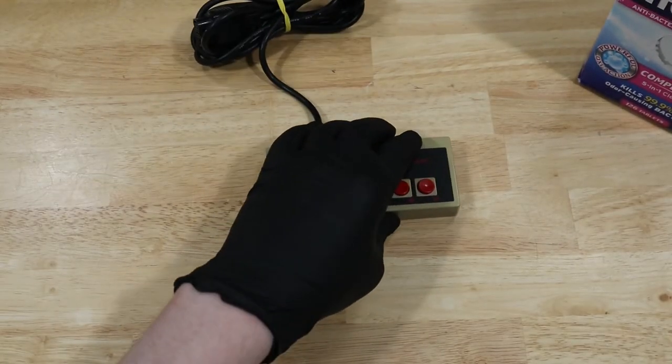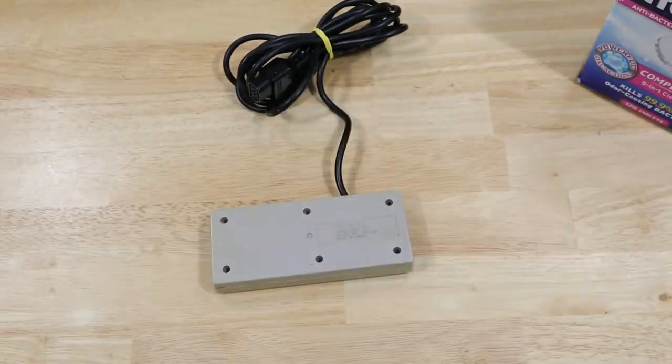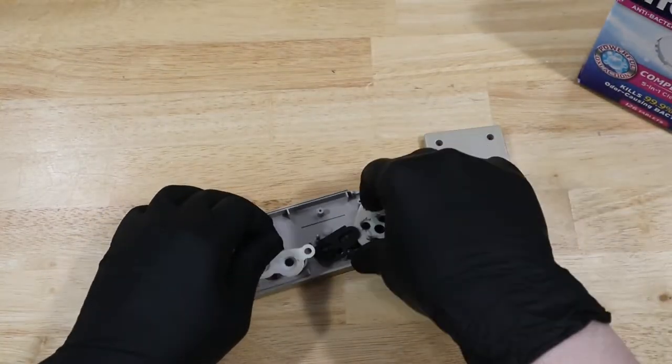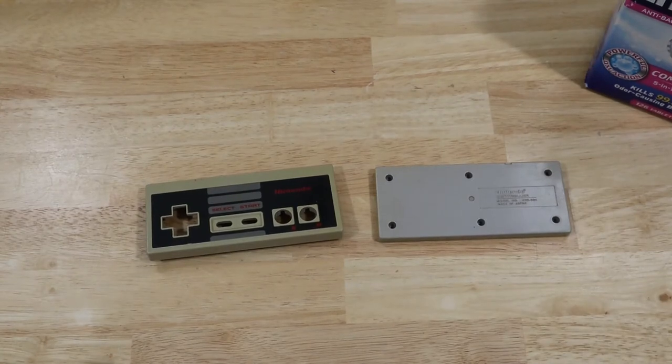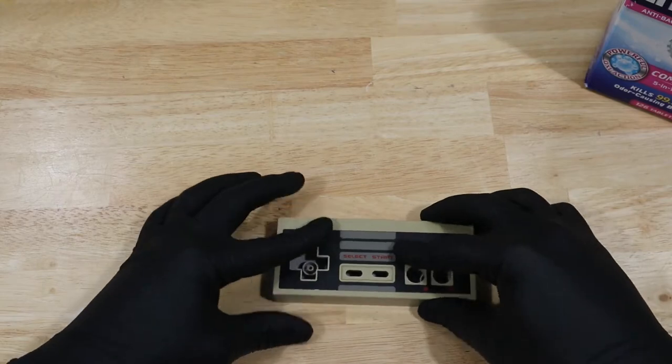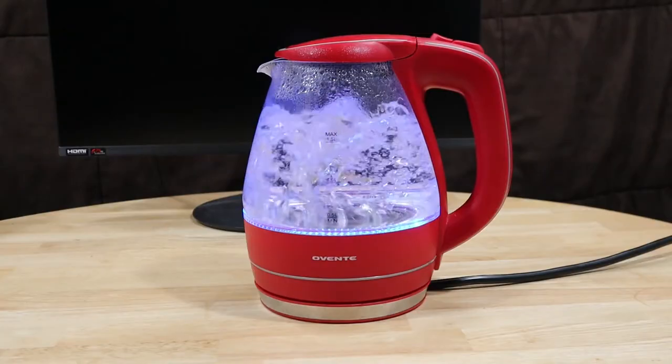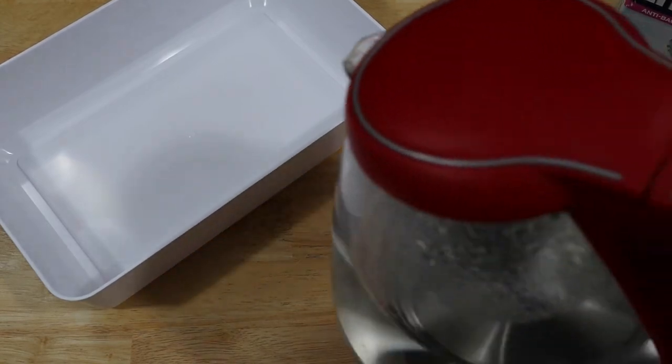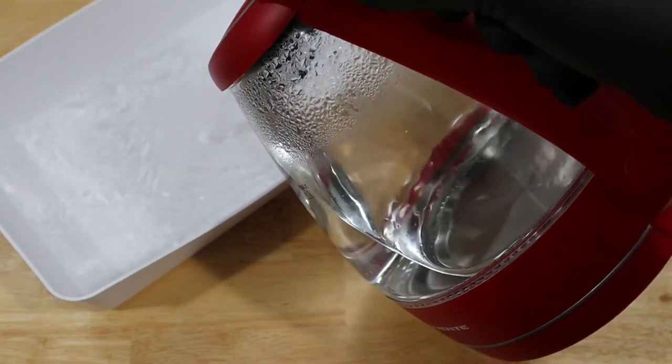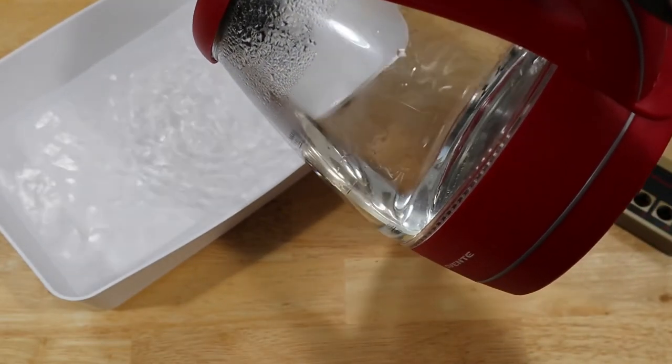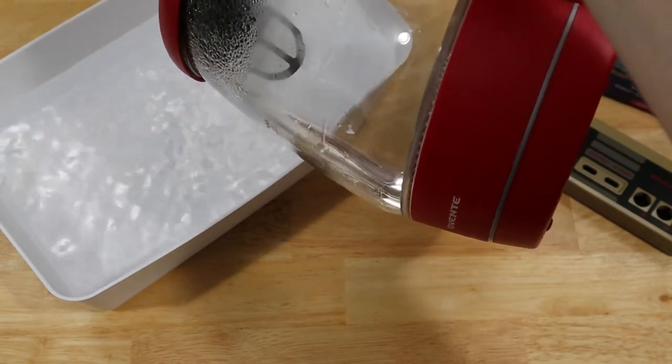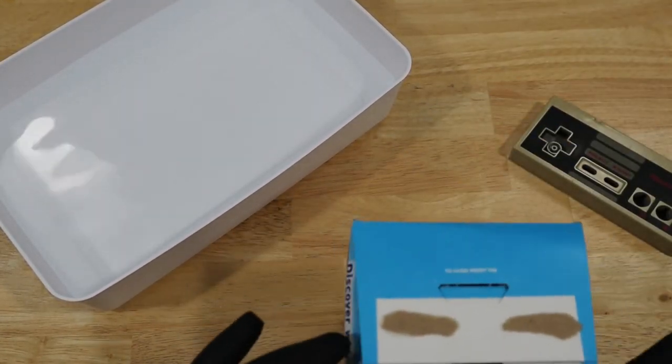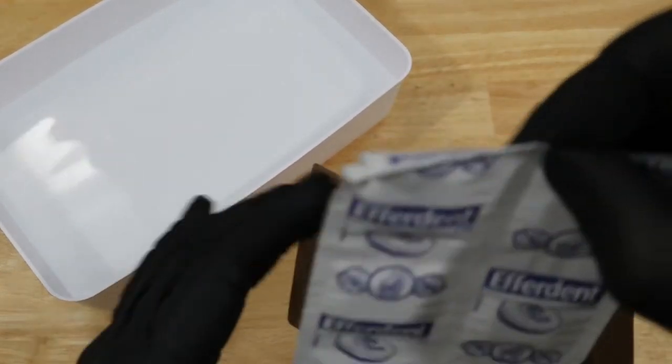Let's start by taking apart the NES controller. With the shell removed, per the instructions on the denture tablets, we're supposed to start with very warm water. This should be warm enough. With my very warm water placed in the tray, let's count out some denture tablets.